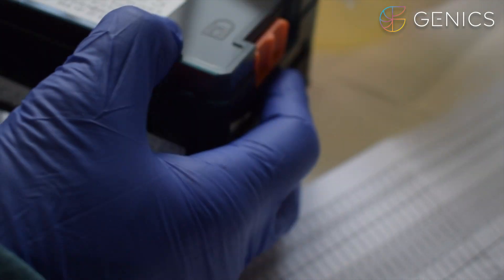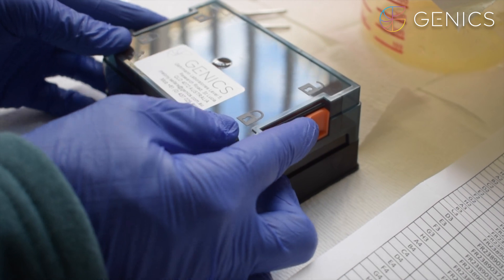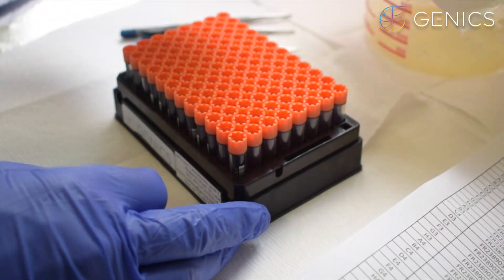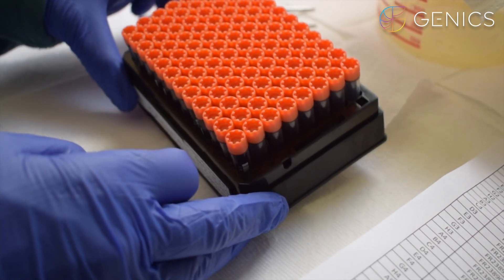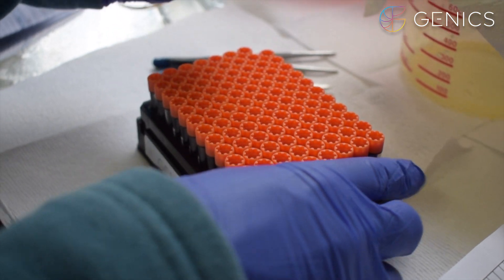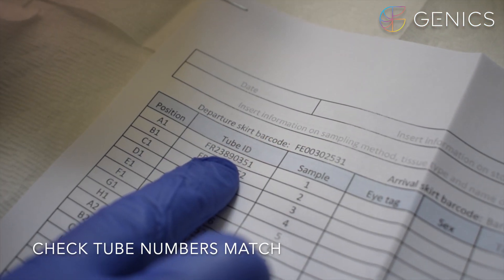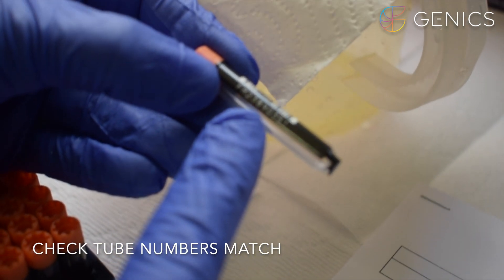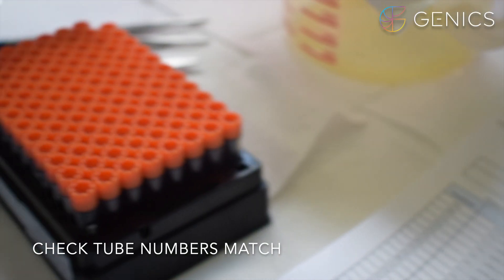You can then take your tube rack and unlock it by pushing the orange tabs into the unlock position. This allows you to remove your lid. You can then remove the tube from the top left corner which is in position A1 and check this tube barcode here matches the one on your tube FR23890351.